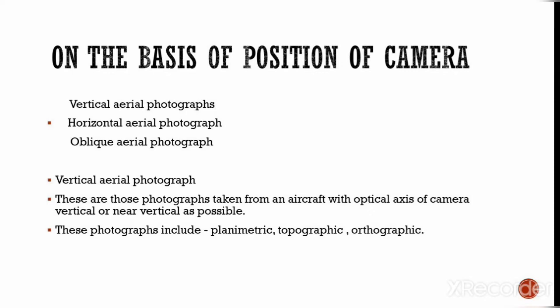We will first look at the position of the camera and how many types of photographs exist on that basis. There are three: vertical aerial photographs, horizontal aerial photographs, and oblique aerial photographs. Vertical aerial photographs are those taken from an aircraft with the optical axis of the camera vertical, or as near vertical as possible. These are called vertical aerial photographs.